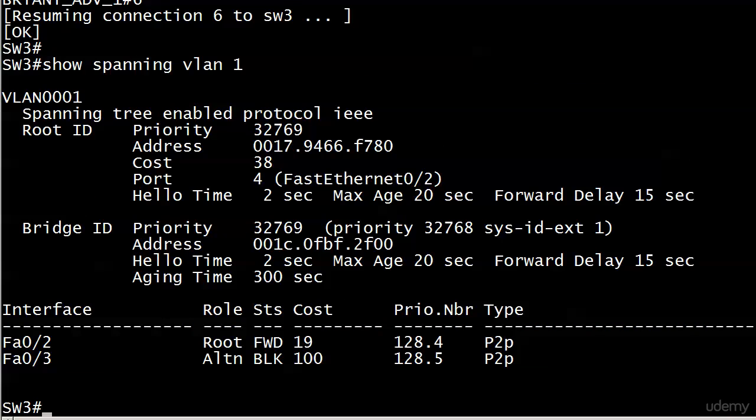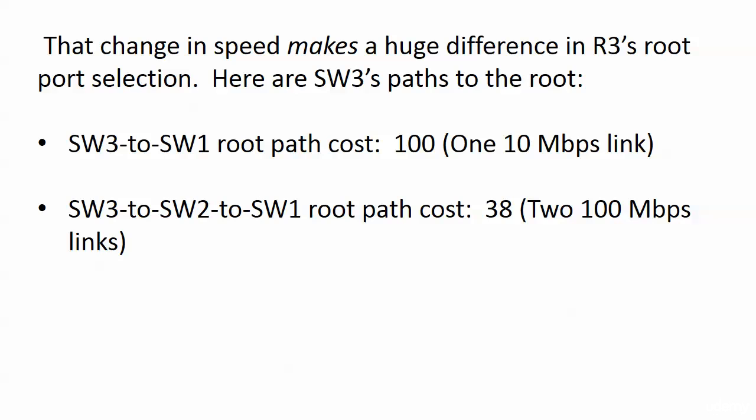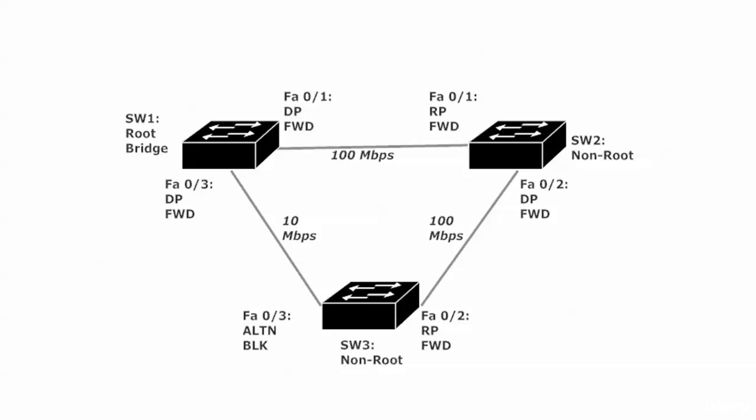The directly connected link — fast ethernet 3 — is in blocking mode because we changed the speed, and therefore changed the port cost. From switch three's point of view: the direct switch-three-to-switch-one path cost is now 100, because that's a 10 meg link. The switch-three-to-switch-two-to-switch-one path cost is only 38, because we have two 100 meg links at 19 + 19 = 38.